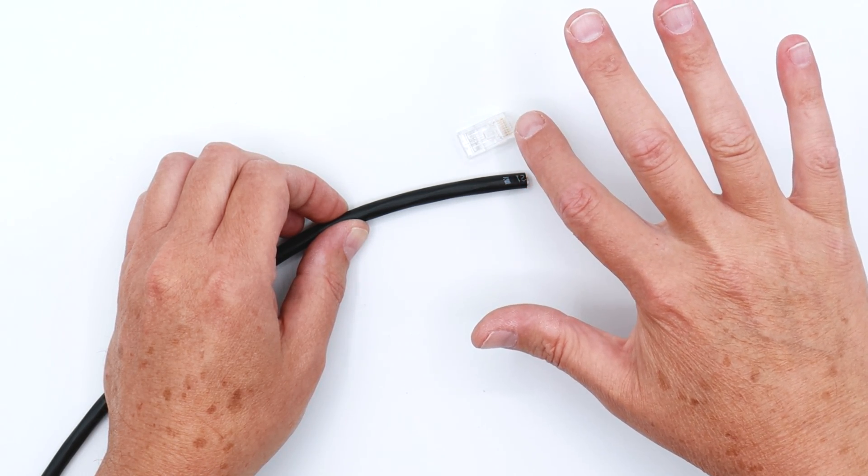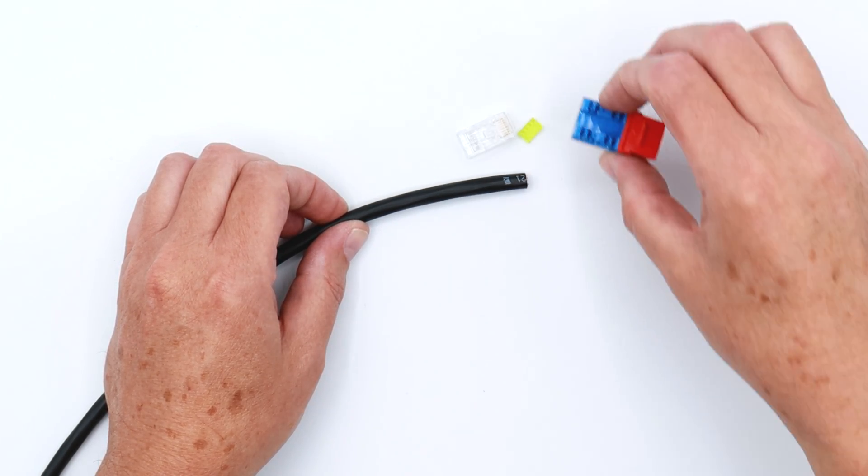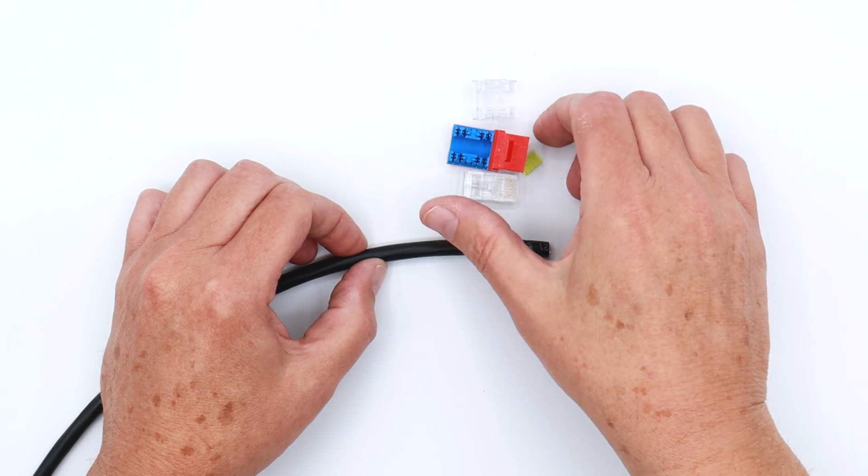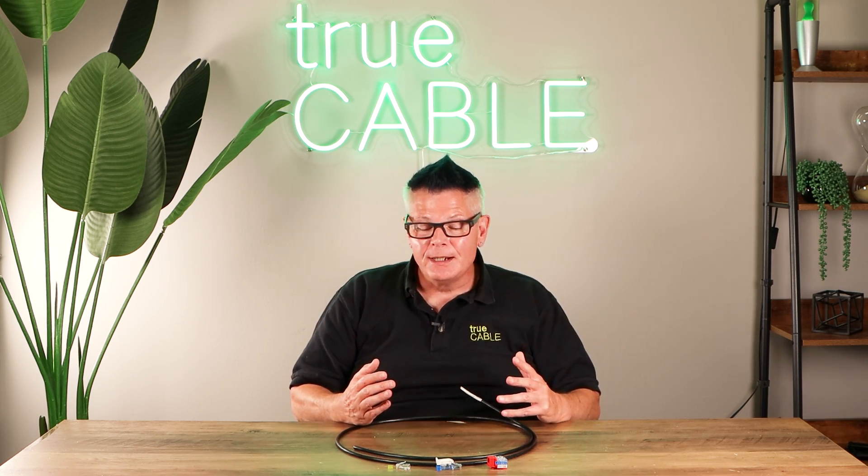And if you do have to use one of these, we recommend using it only on one end of the cable. And the other end should be something like an IDC style termination like this keystone. So that's the way to achieve 10 gigabit performance and retain it. So we're going to get into how the cable is constructed and talk about some of the merits of the cable. Be right back, don't go away.